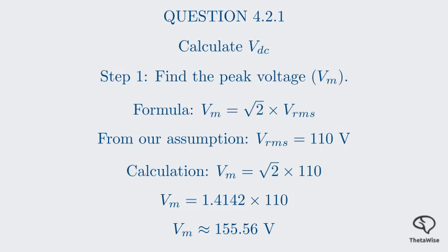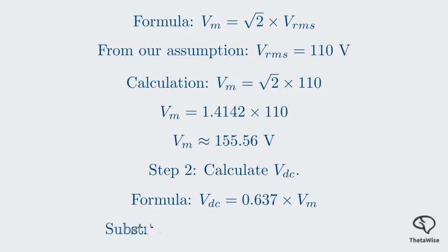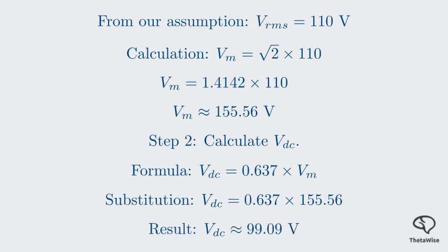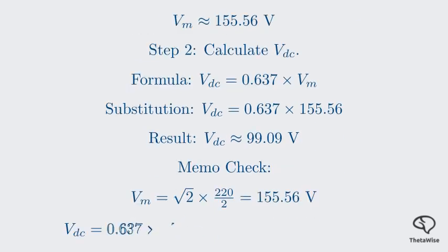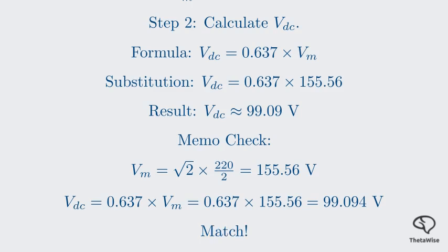Now we can use this peak voltage to find the DC voltage, which is the average value of the rectifier's output. Using our formula: V_DC = 0.637 × 155.56 volts, which gives us approximately 99.09 volts DC. So the rectifier circuit will provide an average DC voltage of about 99.09 volts across the load resistor. Checking with the memo: it also calculates V_M as 155.56 volts and V_DC as 0.637 × V_M = 99.094 volts. Our calculation is a perfect match.